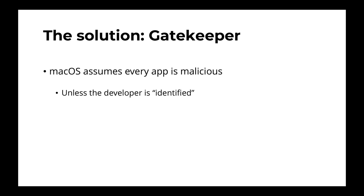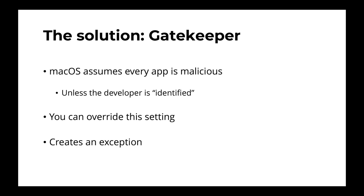The way macOS works is that it assumes every app is malicious unless it is from an identified developer. An identified developer tells Apple that yes, this application is actually safe to run and will not harm your computer. You can override the setting — that's actually what we did to get rid of the error message and get the application to run. What this does is it creates an exception. So every time you boot up some sort of application or plugin, macOS will still look to see: A, is it from an identified developer, and B, is it on the exceptions list? So all we did was add it as an exception.